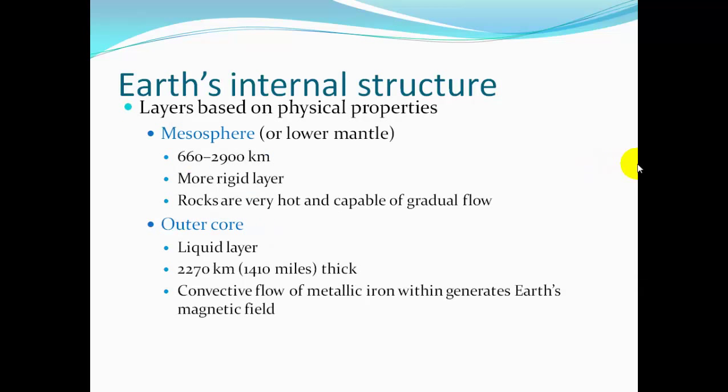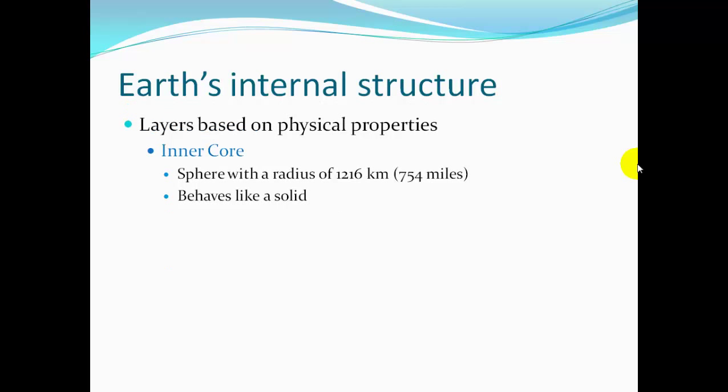The mesosphere, or lower mantle, is below 660 kilometers. It is a more rigid layer where rocks are very hot and capable of gradual flow. The outer core, below the mantle, is a liquid layer about 1,410 miles thick, composed of an iron-nickel alloy with an average density of nearly 11 g/cm³. Convective flow of metallic iron in the outer core generates Earth's magnetic field.